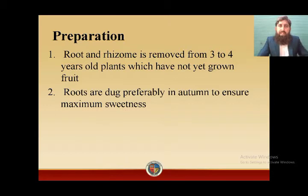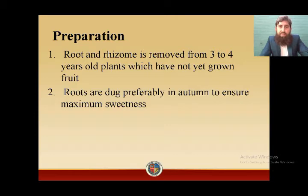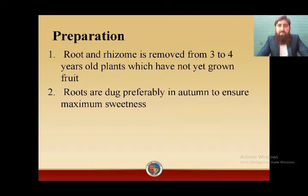So we must wait three to four years to obtain glycyrrhiza as a crude drug. Roots are dug preferably in autumn, because in autumn they have maximum sweetness. After cutting or digging the roots, they are washed and dried in shade for four to six months for the purpose of curing. Curing is a slow drying process in which precursor compounds are converted into the actual desired compound.